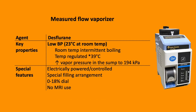Desflurane is different from other volatile agents, and therefore requires a different vaporizer. Firstly, it has a low boiling point, so it would intermittently boil at room temperature. The vaporizer increases the temperature to 39 degrees Celsius, resulting in an increased pressure of 194 kilopascals. Special features of this vaporizer include: it requires electrical power, is controlled by electrical measures unlike other plenum vaporizers, has special filling arrangements, a higher concentration dial up to 18%, and cannot be used in MRI.